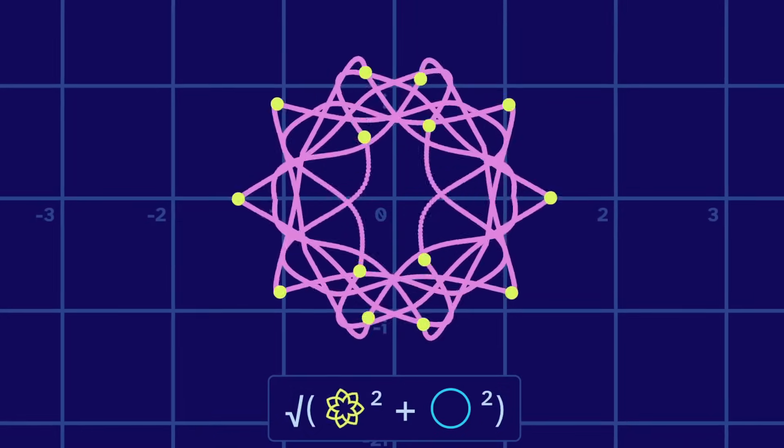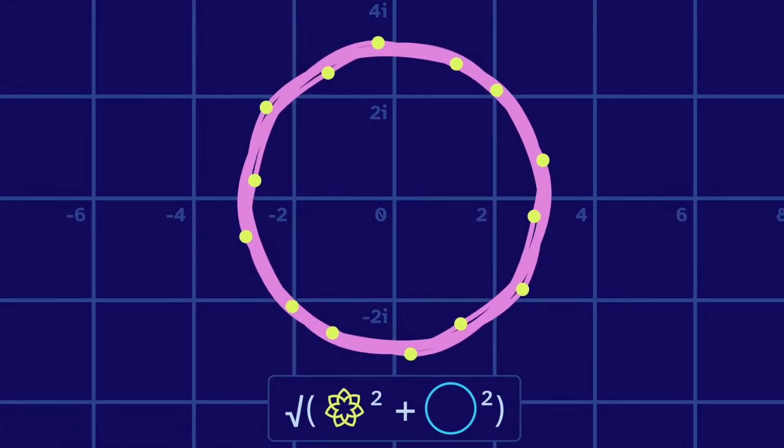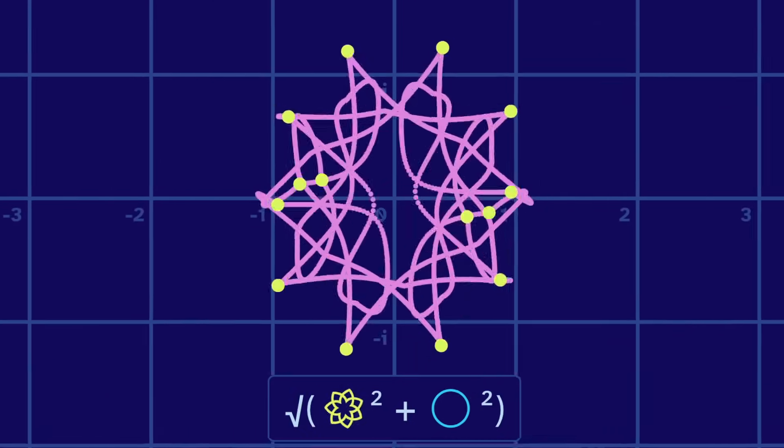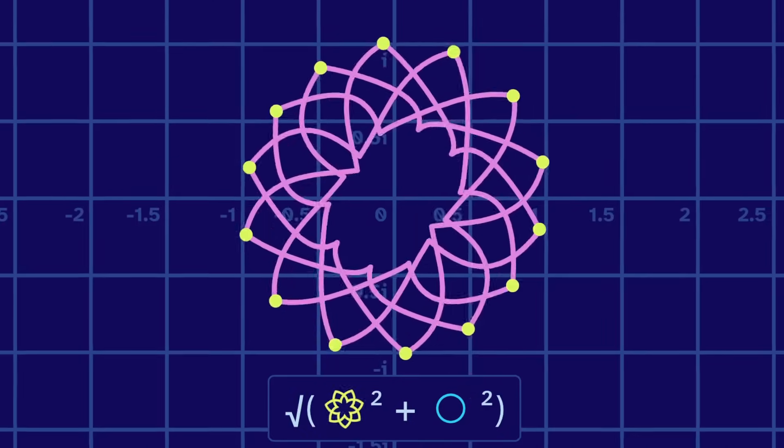Now, what if we make the circle bigger? The output tends towards a circle. And if we make the input circle smaller, the output tends to the spinning flower.